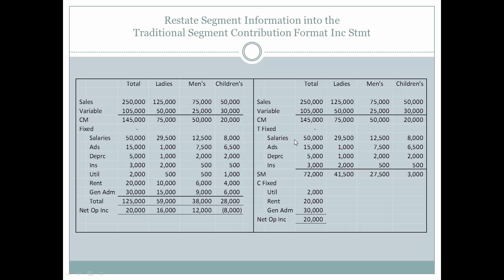So salaries for the children's department would still continue, ads for the children's department would still continue, and depreciation on the fixtures for the children's department would still continue, as well as the insurance. Taking the traceable fixed expenses associated with the segment will give us segment margin. This is different from the contribution format income statement — here we look at segment margin for each of the individual segments.